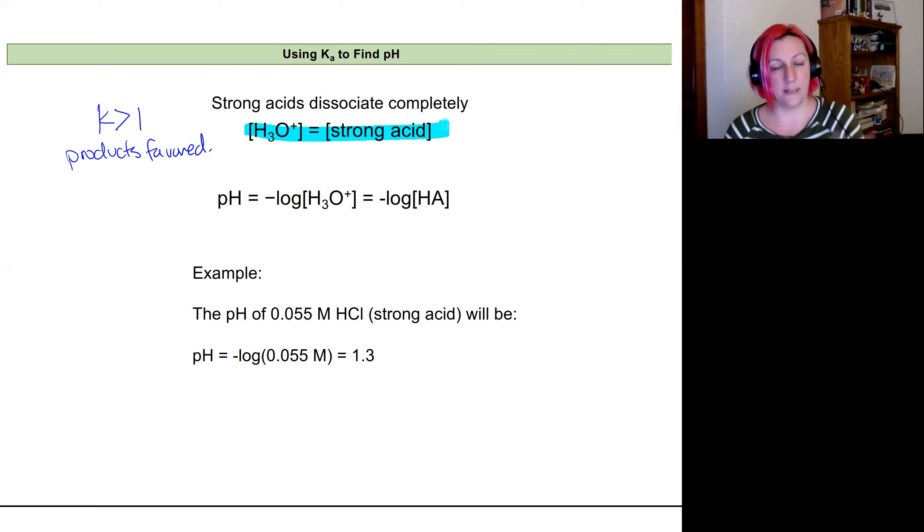So an example, let's look at the pH of hydrochloric acid, which is a strong acid. All of those things break apart, all those hydrochloric acid molecules. So if I have a 0.055 molar concentration of hydrochloric acid, which is strong, I'm going to use that concentration as my concentration of hydronium ions.